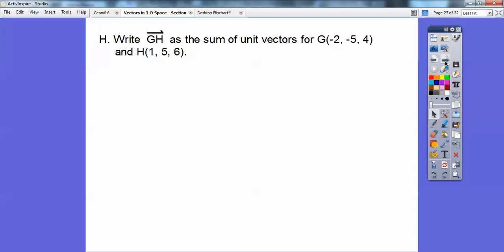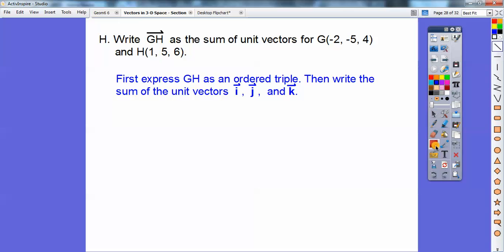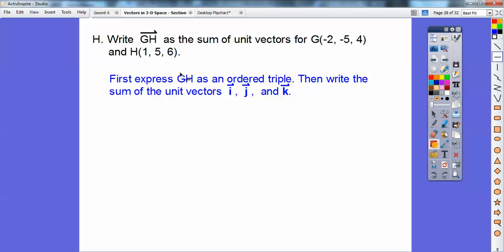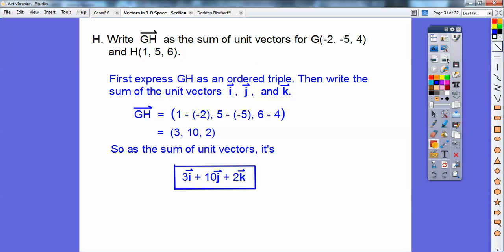Okay, so write the vector GH as the sum of unit vectors for those two points right there. So it's the sum of unit vectors, that just means we're going to first express GH, that should be a ray right there. Let me insert that right there, and you can see my little secrets how I'm doing all that. So there's my vector GH. And then after I express it as an ordered triple, then I just add it. And then it's going to be whatever that x is, i, plus that y, j, plus that z, k. So here we go. So there's the ordered triple of vector GH right there. And then so now it's just going to be 3i plus 10j plus 2k. So there it is, it's unit vectors. Unit vectors means you're going to do the i, j, k with that. So there's your final answer right there. Easy enough.